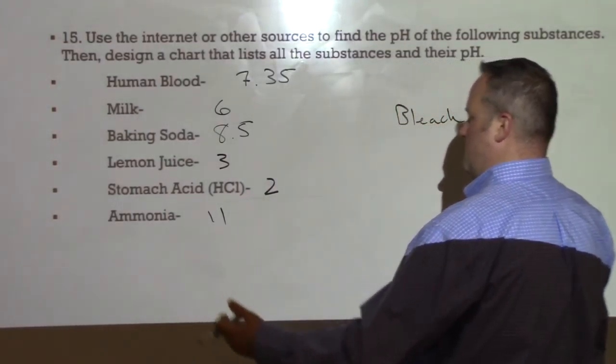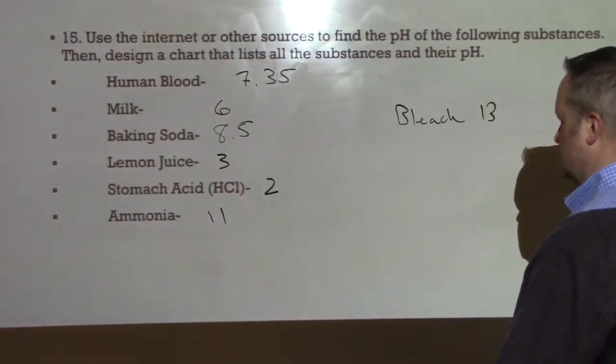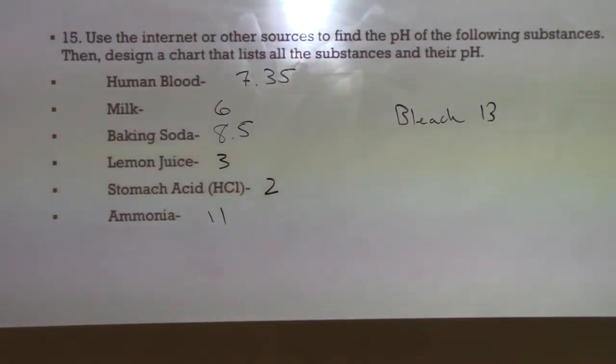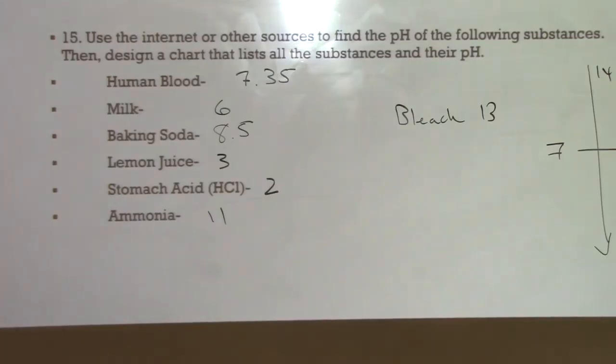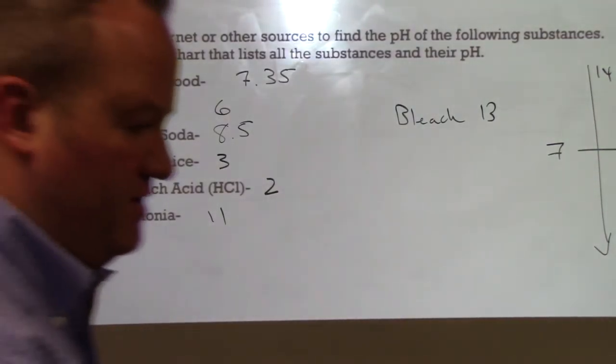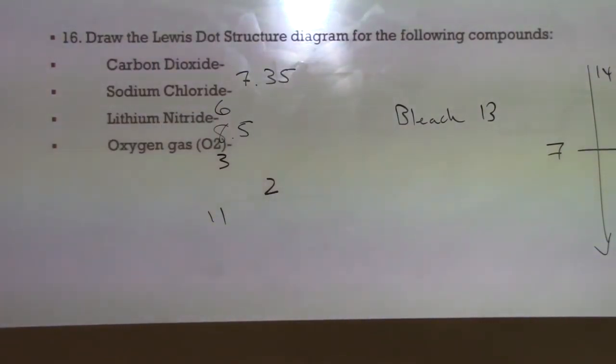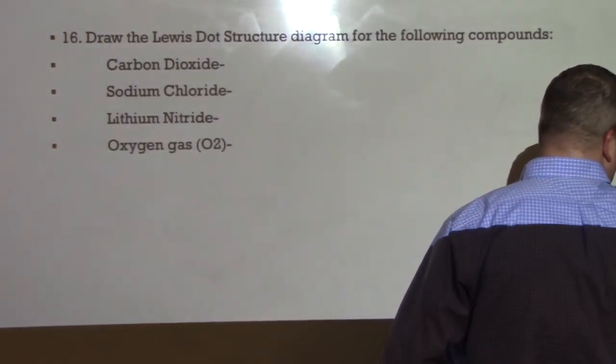Alright? So what I would like for you to say is that human blood is slightly basic. Milk is slightly acidic. Baking soda is basic. Lemon juice is going to be greatly or prominently acidic. Stomach acid is acidic. And ammonia is going to be extremely basic, as is bleach. Okay? So, again, you were asked to design a chart. So you should have this in a range going from 14 all the way down to 0. So, 7 in the middle, 7 is neutral. Water should be around 7. Although, if you drink Dasani water, it actually has a little bit of basis added to it. So it has a slightly higher pH. Probably around a 7.5, because of the chemicals that are added to it. Perfectly safe to drink, by the way.